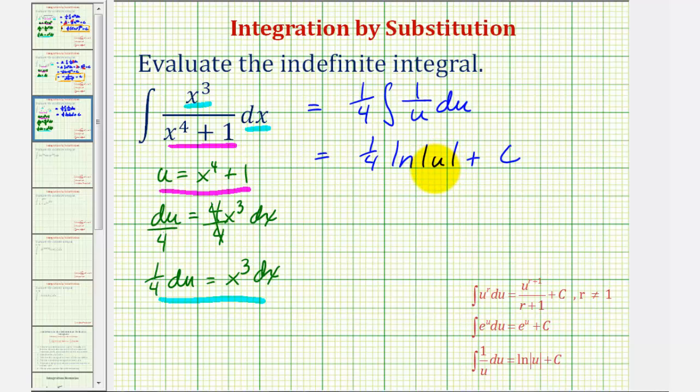But now we want this in terms of x and u is equal to x to the fourth plus one. Notice x to the fourth plus one is always positive. So we can drop the absolute value. We would have one fourth natural log of the quantity x to the fourth plus one plus c. This would be our anti-derivative using u substitution.